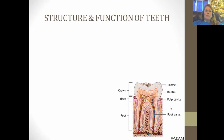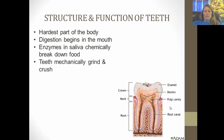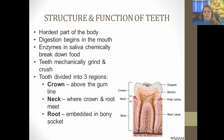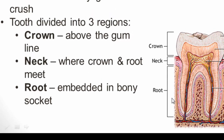Now let's talk about the structure and function of teeth in order to identify bite marks. Teeth are the hardest part of the body. Digestion begins in the mouth — first chemically through enzymes in saliva, then mechanically as teeth grind and crush food. The tooth is broken into three regions: the crown, which is the white part visible above the gum line; the neck, between the crown and the root; and the root, which is embedded in the bony socket or jawbone.